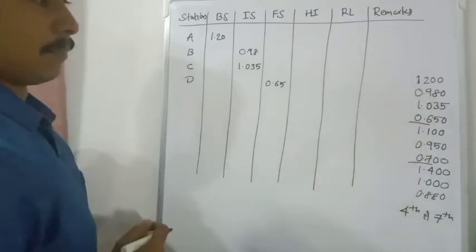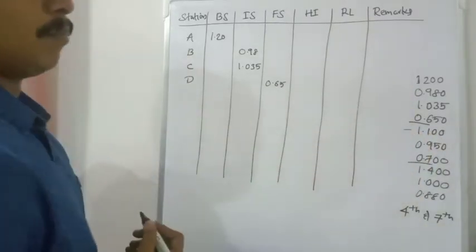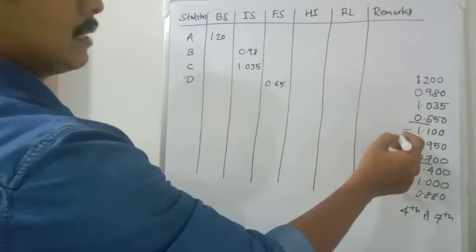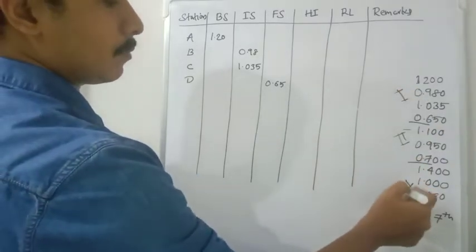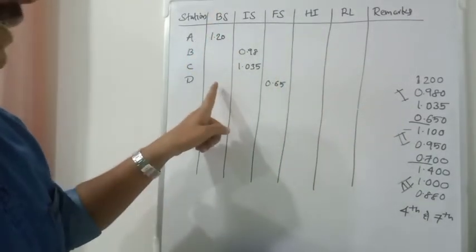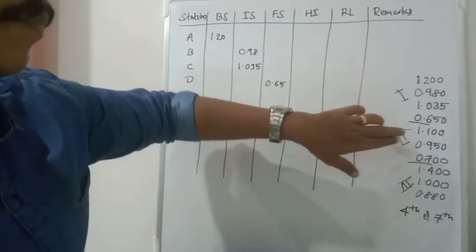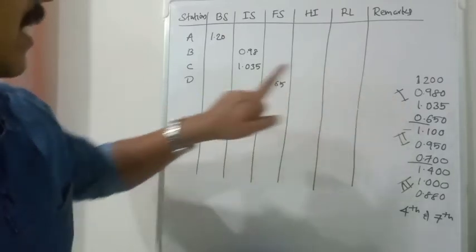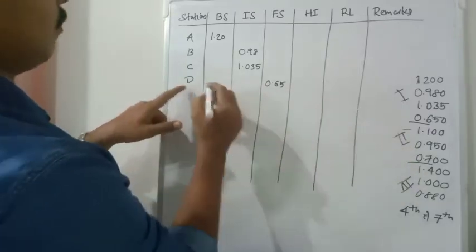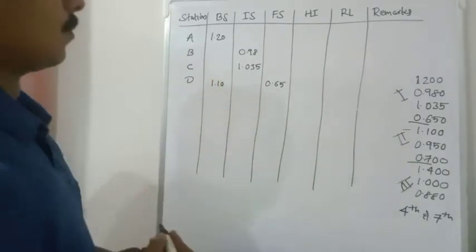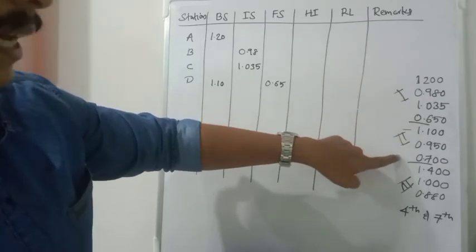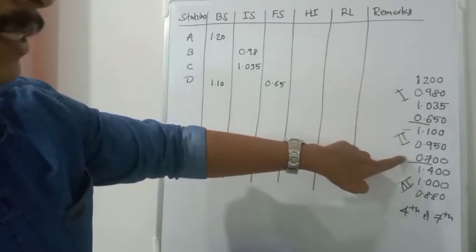The instrument was shifted after the fourth reading. So the next reading, 1.10, was taken as the first reading from the second instrument setup. As it is the first reading, it will be written on the back side. As per the rule, the last reading of the previous instrument setup goes to the fore side of station D. So 1.10 is entered as back sight on station D.